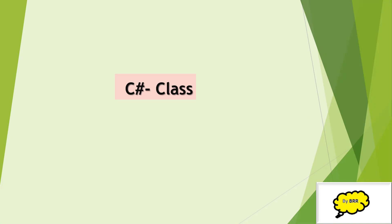In object-oriented programming language, this class is widely used. A class is nothing but a set of methods, attributes, fields, and properties. An object is a specific instance of a class — if you create an object for the class, it contains the real values instead of variables. The class is one of the defining ideas of object-oriented programming, which completely depends on this class-object concept.